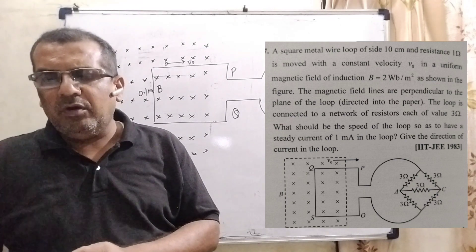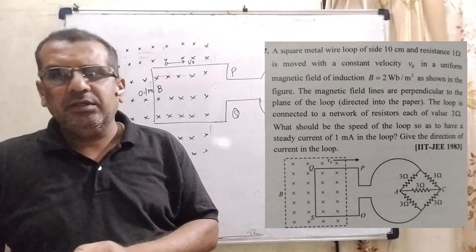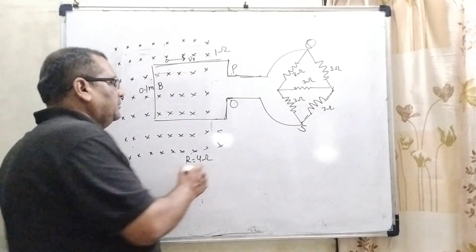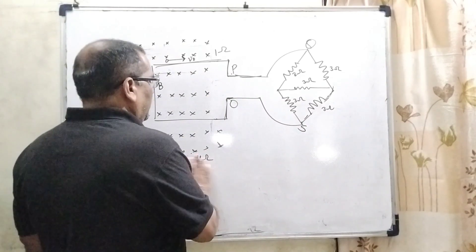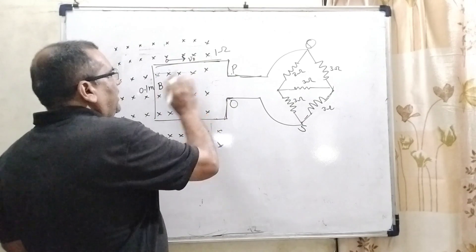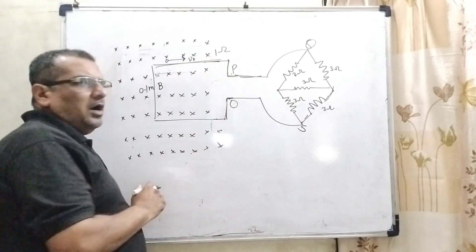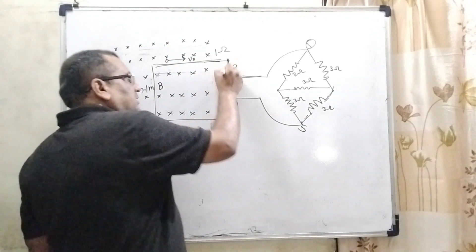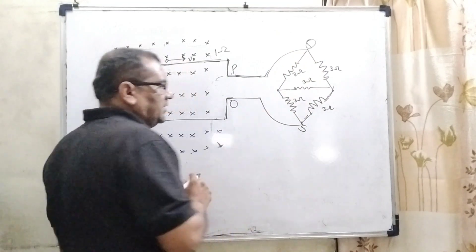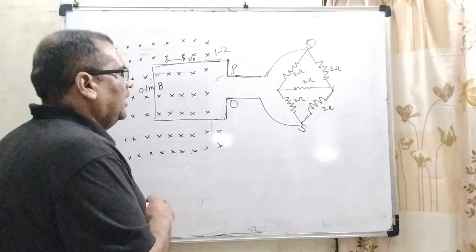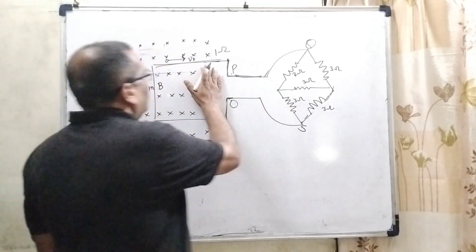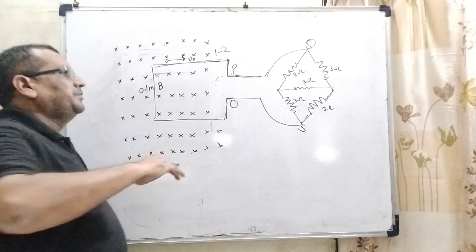Give the direction of the current in the loop. So, according to the figure, this loop is partially inside and partly outside the magnetic field. And this is connected with this network of resistance. We have to find out the velocity of this loop.